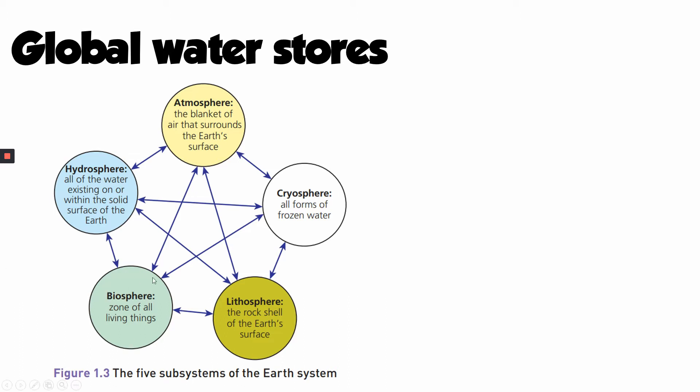Water is present within the biosphere — which refers to all living things, plants and animals on the planet. It's present in the lithosphere, which is the hard, rigid outer shell of the planet — the rocks and soils beneath our feet. It's present in the atmosphere, the blanket of gases that surrounds the planet, and also in the cryosphere, which is the name we use for all forms of frozen water: snow, ice caps, glaciers, and even permafrost.